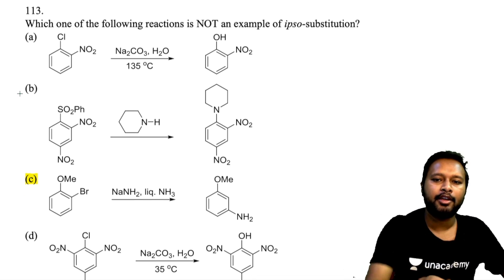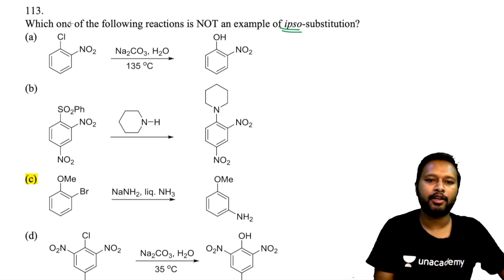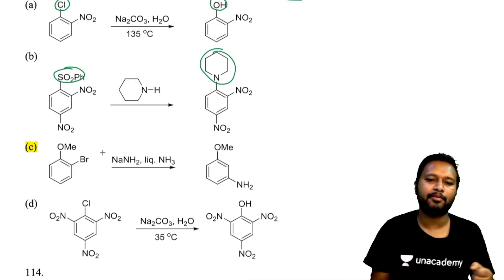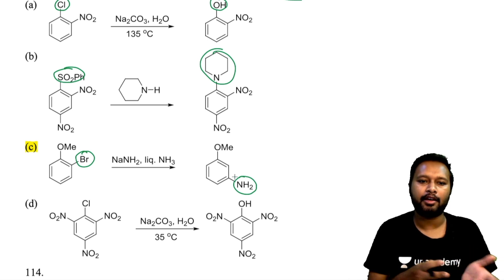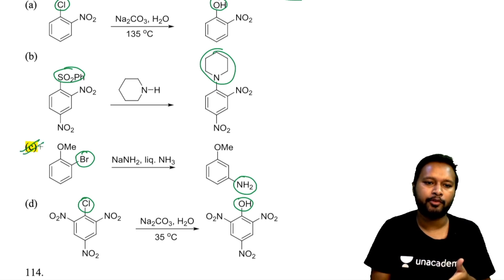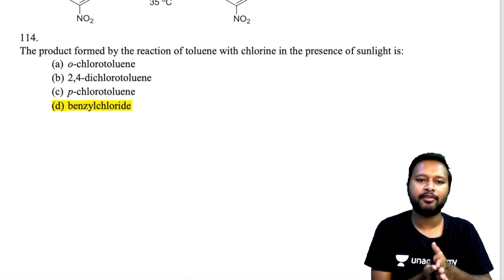Question 113 asks which reaction is NOT an example of ipso substitution. Ipso substitution means the incoming group replaces the leaving group at the same carbon. Options A, B, and D all show the group entering at the same position (ortho/para to NO₂, same carbon). Option C shows bromine leaving from ortho and NH₂ entering at the meta position — this proceeds through a benzyne intermediate, not ipso substitution. So option C is not ipso.